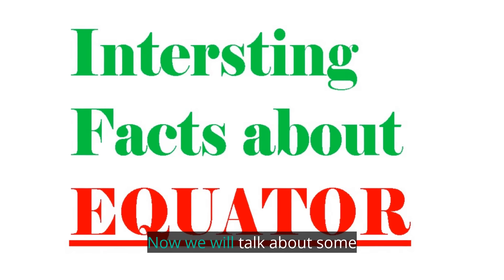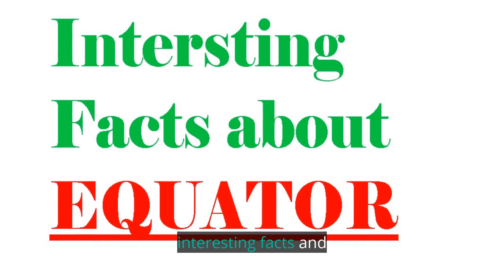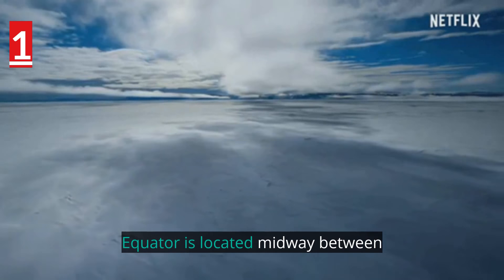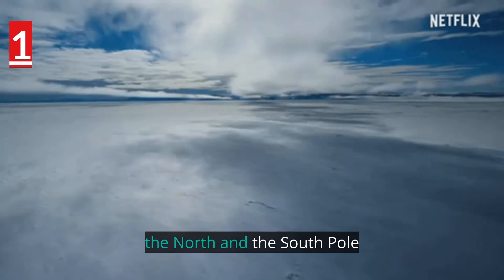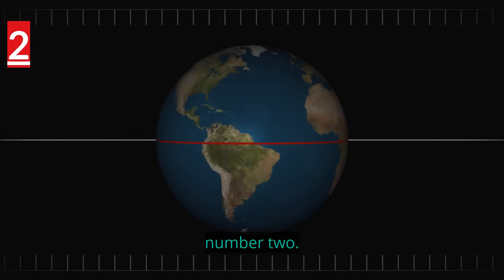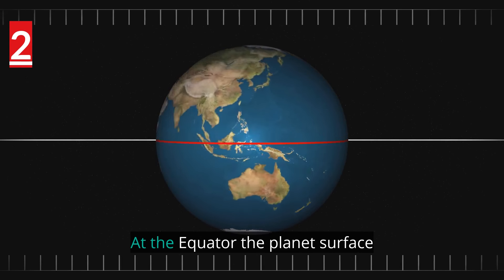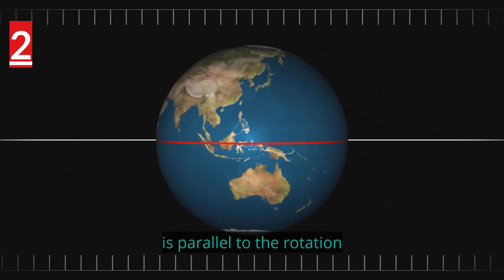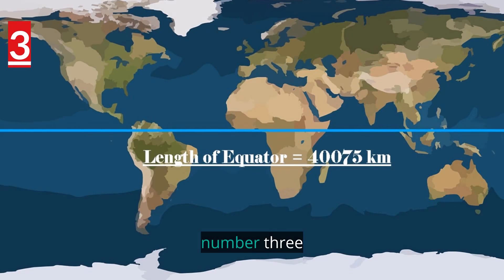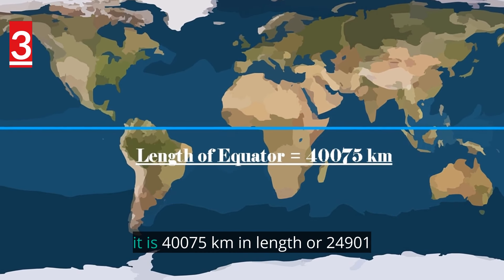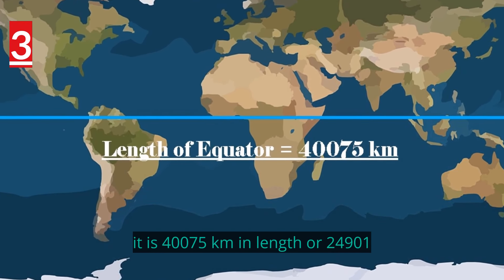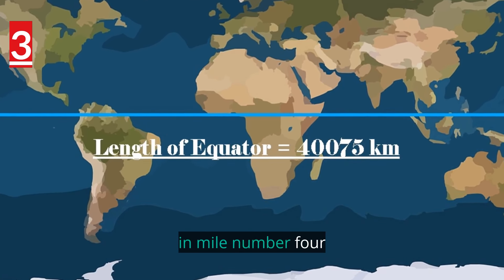Now we will talk about some interesting facts and characteristics of the equator. Number 1: the equator is located midway between the north and the south pole. Number 2: at the equator, the planet's surface is parallel to the rotation axis. Number 3: it is 40,075 kilometers in length, or 24,901 miles.